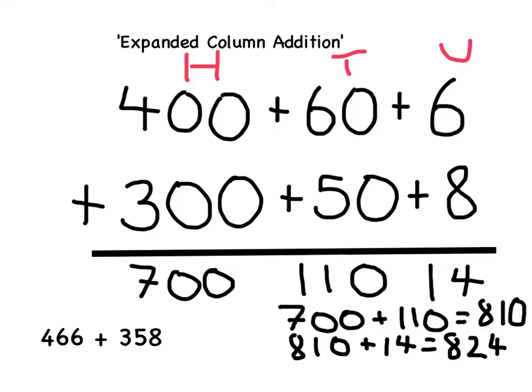This then gives us our final answer to the addition that we originally had. So we now know that 466 add 358 is 824.